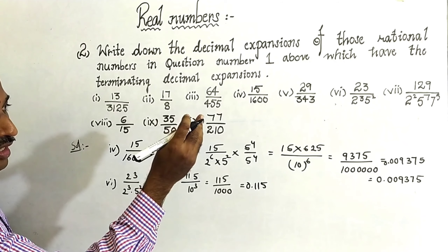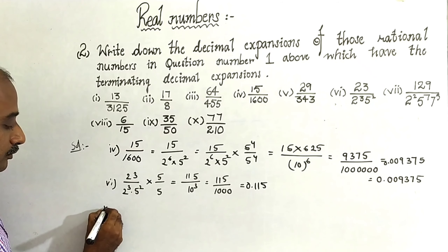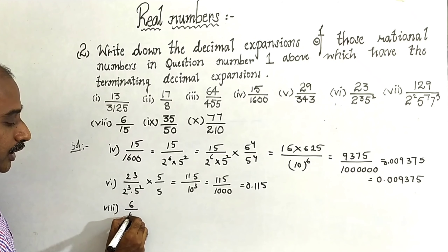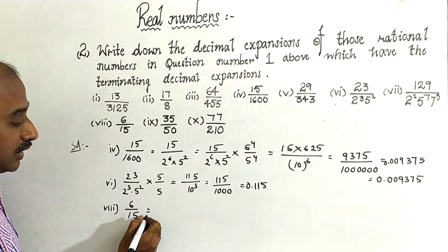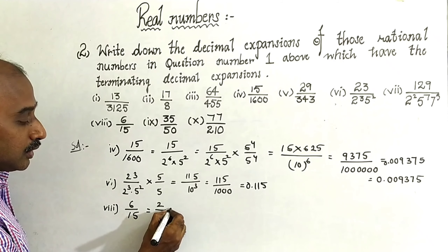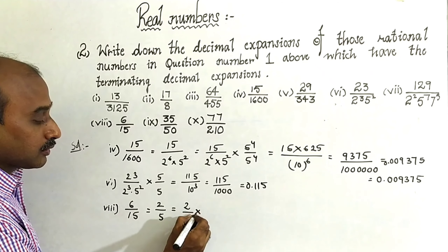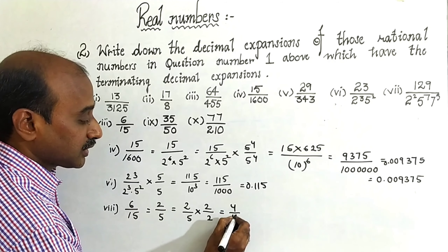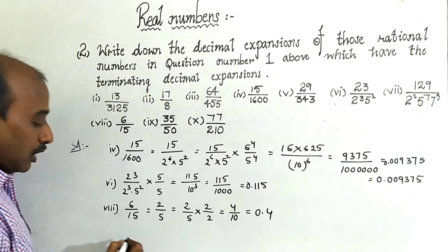Seventh one is non-terminating decimal. Come to eighth one: 6 by 15. You can cancel with 3 — three twos of six, three fives of fifteen — giving 2 by 5. Now multiply: two twos of four, five twos of ten. So 4 by 10 is nothing but 0.4.